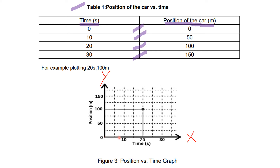Next, we put the values of time on the x-axis — our time is in multiples of 10, so: 0, 10, 20, 30. For the position of the car on the y-axis, it is in multiples of 50: 0, 50, 100, 150. Now plot the data. At 0 seconds, the car is at 0 meters — place a point at the origin. At 10 seconds, the car is at 50 meters — find 10 on the x-axis and 50 on the y-axis, and where they intersect, place a dot.